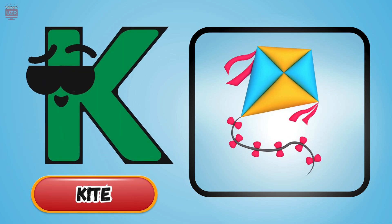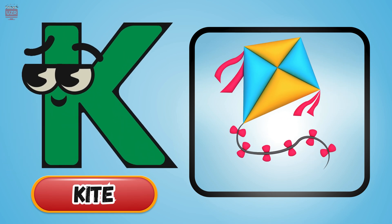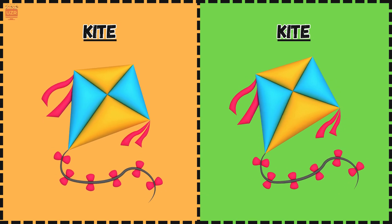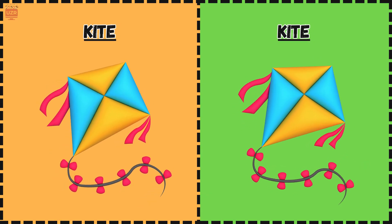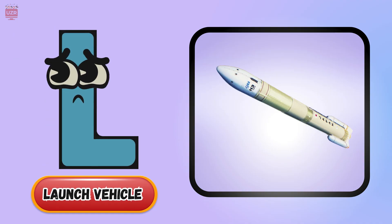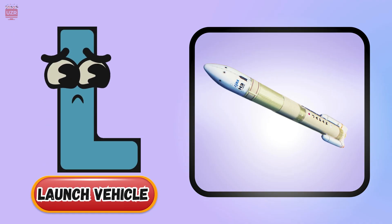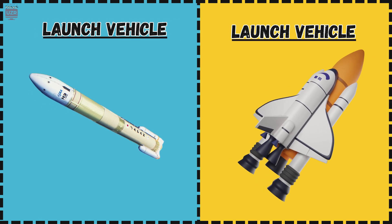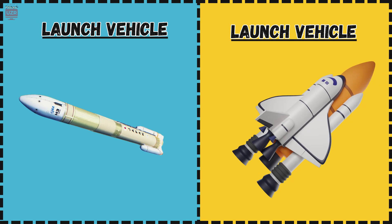K is for kite, dancing gently way up high. L is for launch vehicle, taking rockets to the sky.